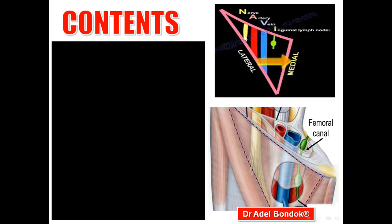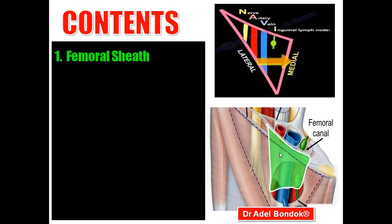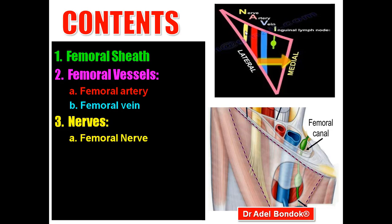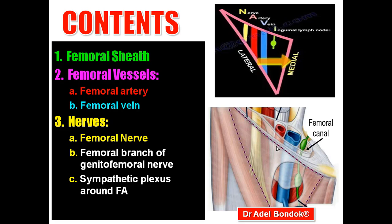Regarding the contents of the femoral triangle, the first content is the femoral sheath, which surrounds the upper one and a half inches of the femoral vessels. Then the femoral vessels: femoral artery and its branches, and femoral vein and its tributaries. The femoral vein is medial, the femoral artery is lateral. Then nerves: the first and largest is the femoral nerve, which is lateral to the artery, and then a small nerve lateral to the femoral artery, which is the femoral branch of the genitofemoral nerve, and a sympathetic plexus around the femoral artery.